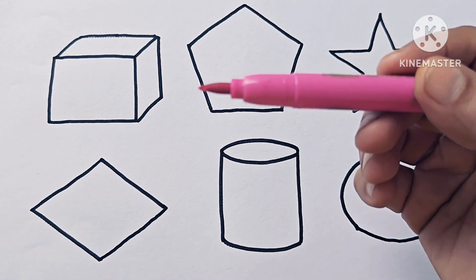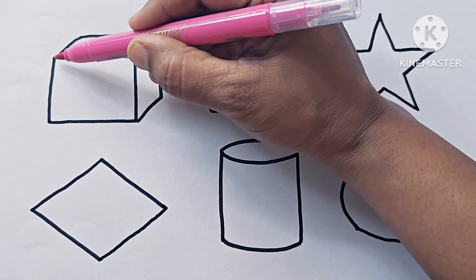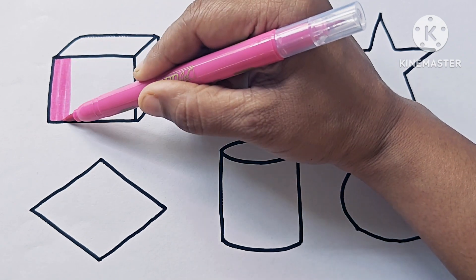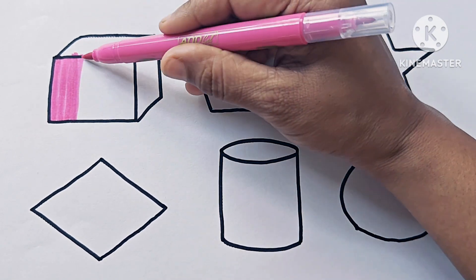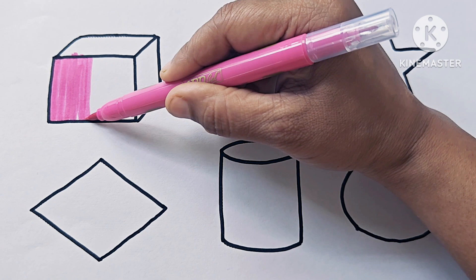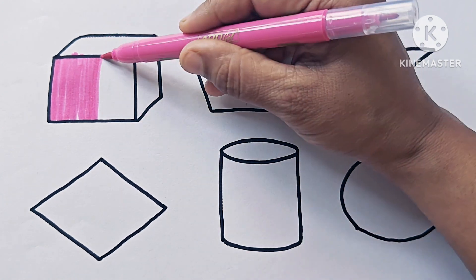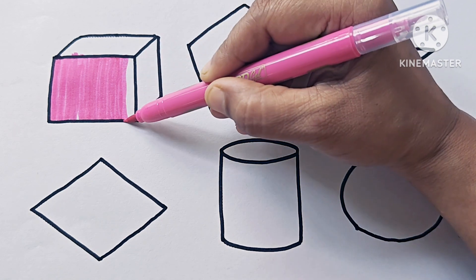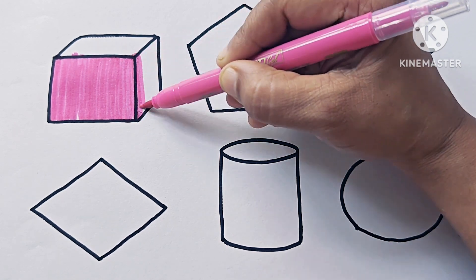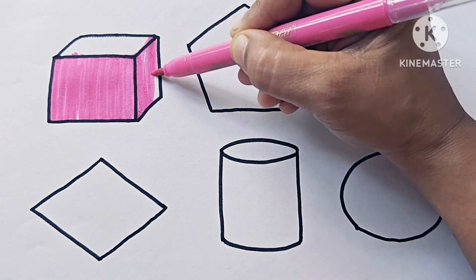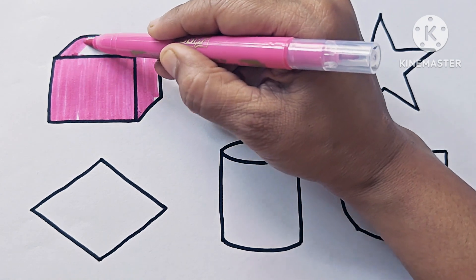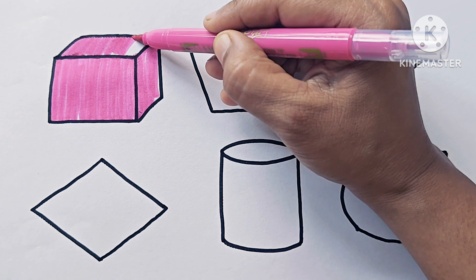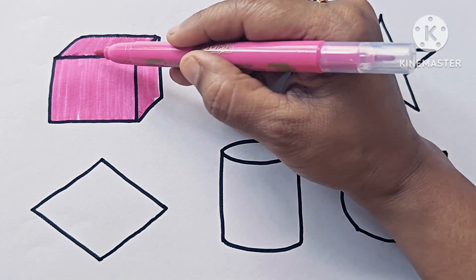Now let us color the shapes. This is pink color — this is the cube. It is a 3D shape.